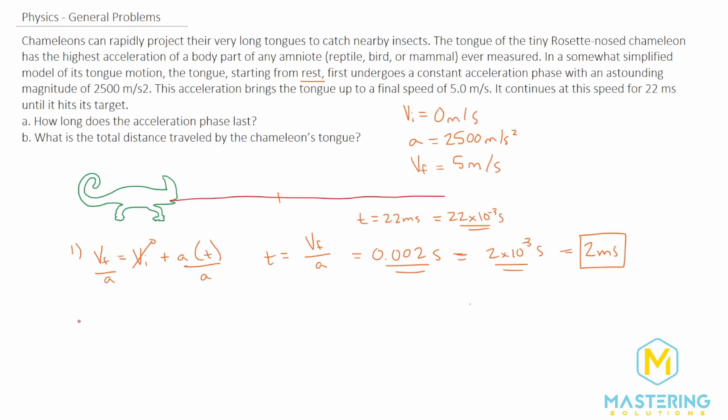Now let's go to part B: what is the total distance traveled by the chameleon's tongue? There are several ways we could go about this because we have quite a bit of information. We've solved for the time for the first section and they gave us the time for the second section. The equation I'll use doesn't include time, but it will still give us the same answer.